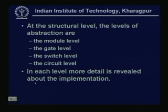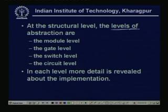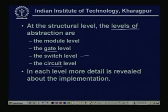At the structural level the levels of abstraction are: module level, gate level, and switch level or circuit level. If it is a very large circuit obviously we cannot represent by NAND gate or AND gate alone — so it can be at module level. A module is a set of gates or even a set of sub-modules, and these sub-modules are realized by sets of gates. That is why there are different levels of abstraction. Each level reveals more detail about the implementation.